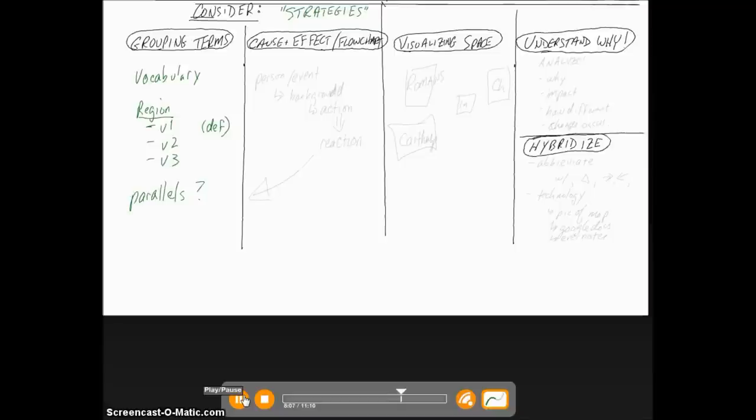The second thing you might want to think about is going to be cause and effect. And maybe when you're taking notes, maybe what you can do is talk about a person or an event, and then just use things like arrows or drop boxes to talk about maybe what their background is. And because of that, maybe what an action was that they did,